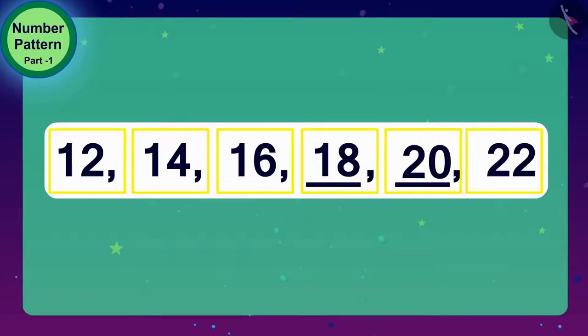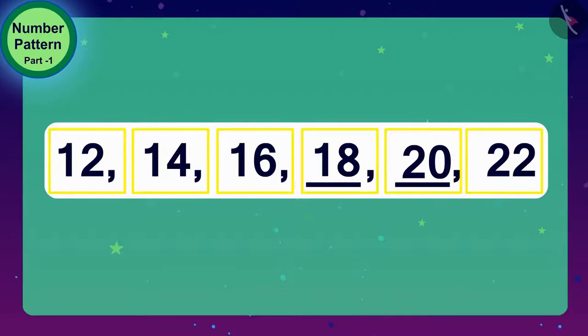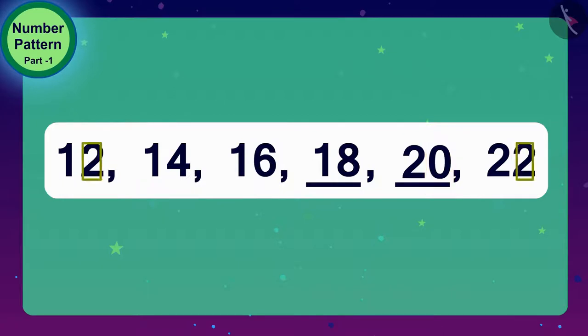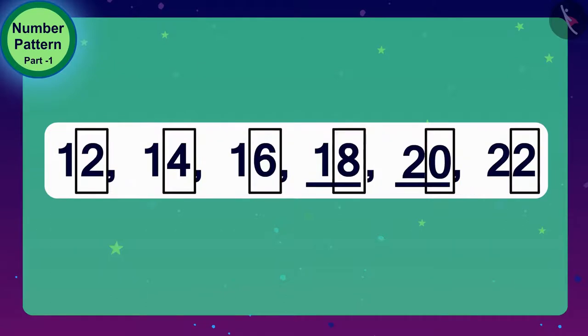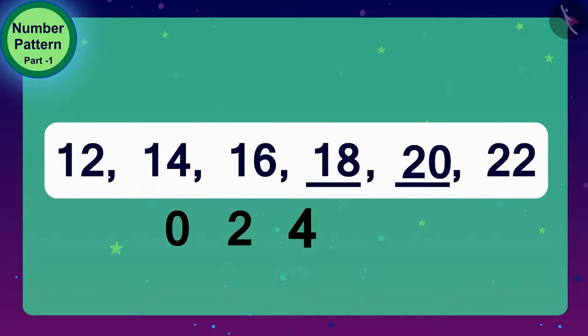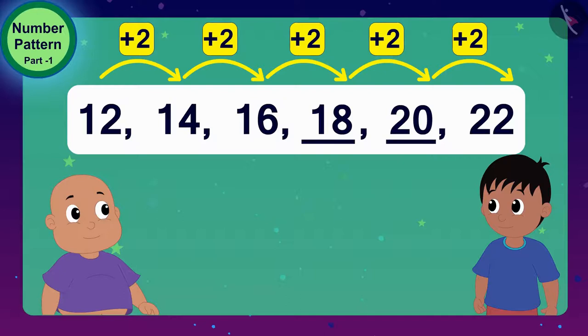Children, do you see one more special thing in these numbers? Here, all the numbers have 0, 2, 4, 6 or 8 at the unit position. Do you know that such numbers which have 0, 2, 4, 6 or 8 numbers at unit's place are called even numbers? Raju and Bablu completed this number pattern using the process of addition. Well done.